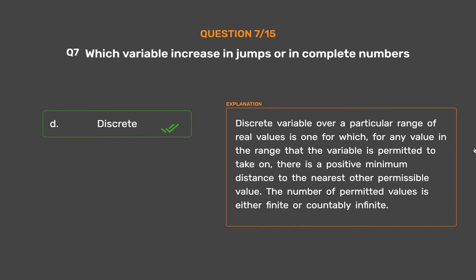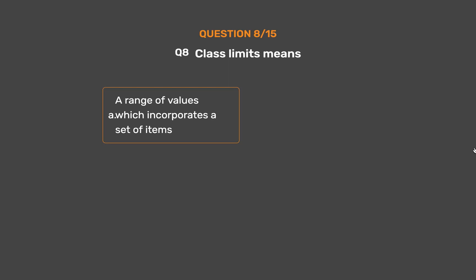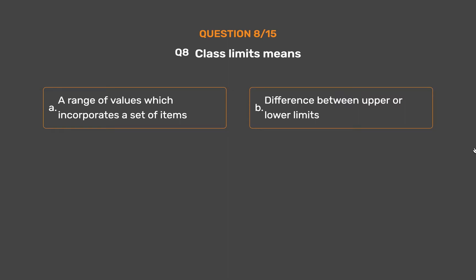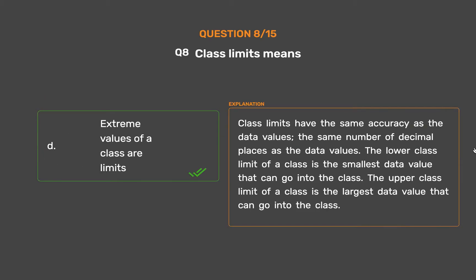The number of permitted values is either finite or countably infinite. Question number 8. Class limits means: Option A: A range of values which incorporates a set of items. Option B: Difference between upper or lower limits. Option C: Sum of upper or lower limits. Option D: Extreme values of a class are limits. The correct answer is Option D: Extreme values of a class are limits. Class limits have the same accuracy as the data values, the same number of decimal places as the data values. The lower class limit of a class is the smallest data value that can go into the class.